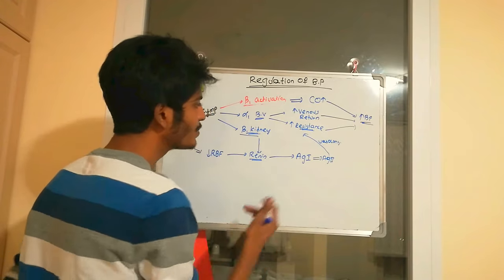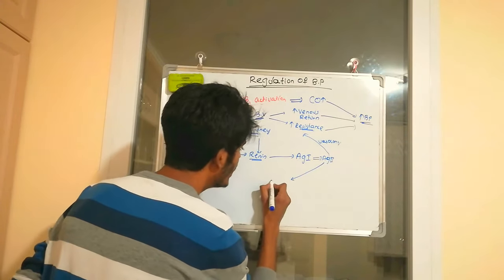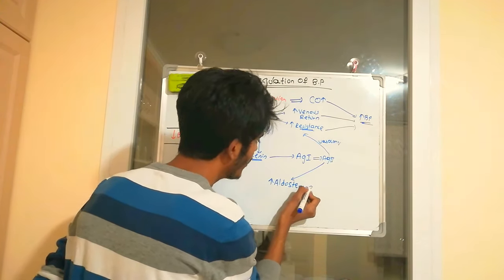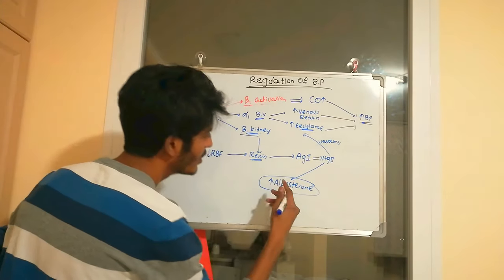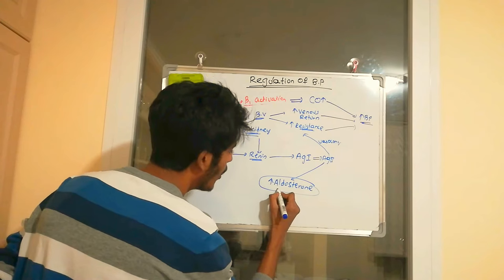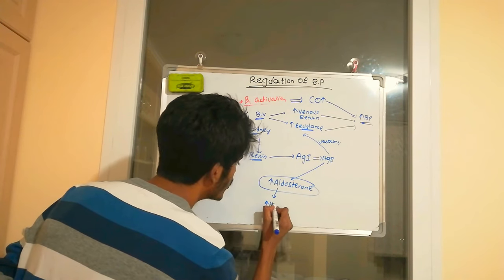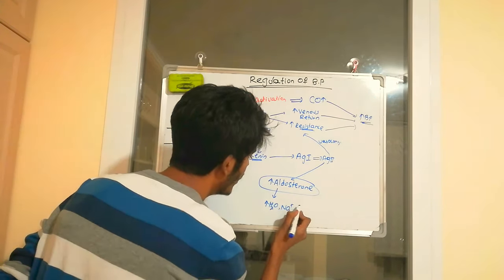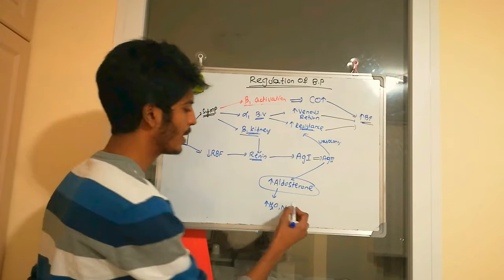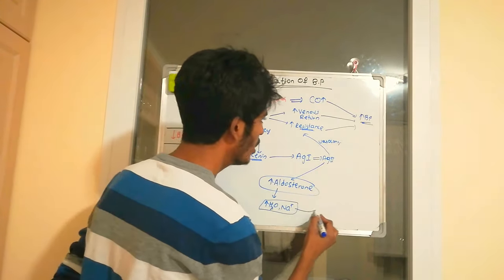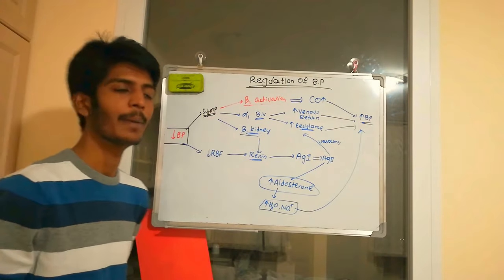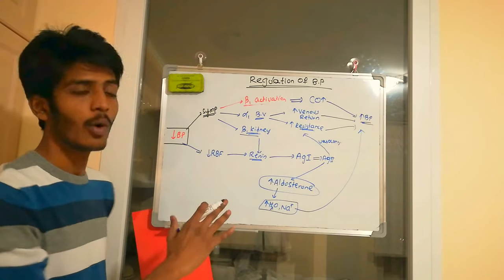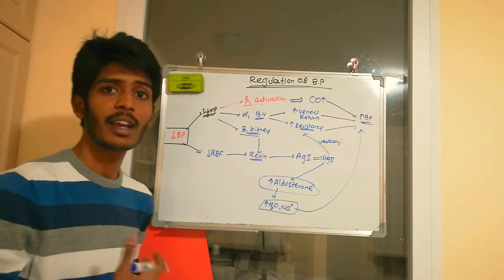Angiotensin 2 also increases aldosterone levels. Increased aldosterone leads to increased sodium and water retention in the body. When sodium and water are increased, the volume of the blood increases, and that increased blood volume leads to increased blood pressure. So whenever there is decreased blood pressure, all these mechanisms are activated.